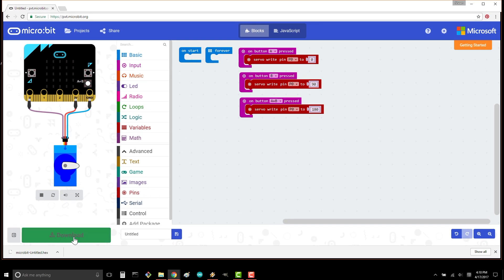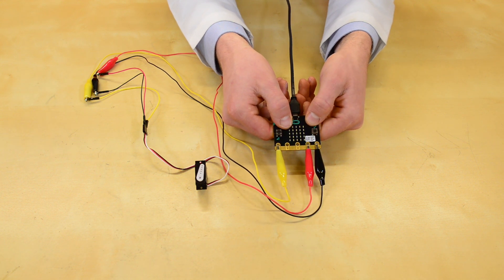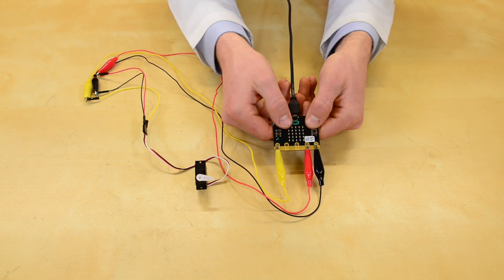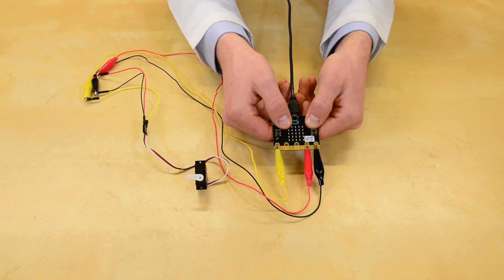Download and copy this program to your micro bit. When you press B, the servo should move 90 degrees. When you press A and B together, you should see the servo move to the opposite position from where it started. And when you press A, it should return to its original position.